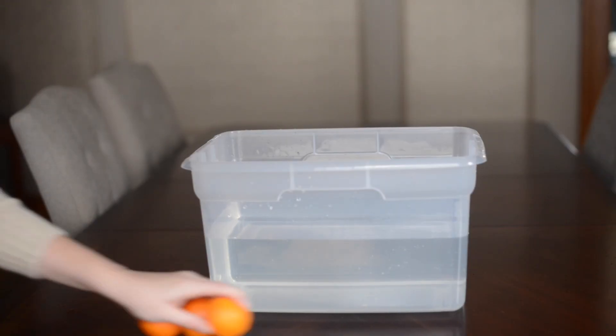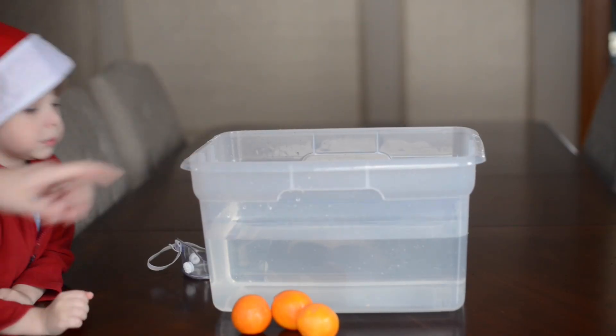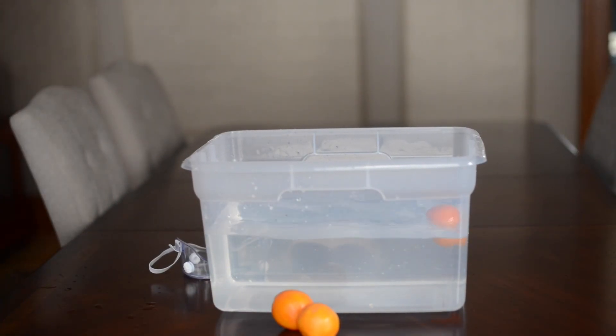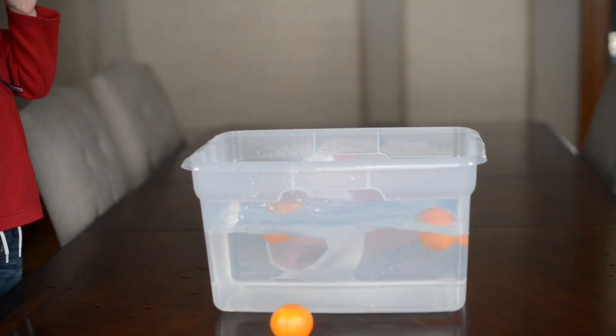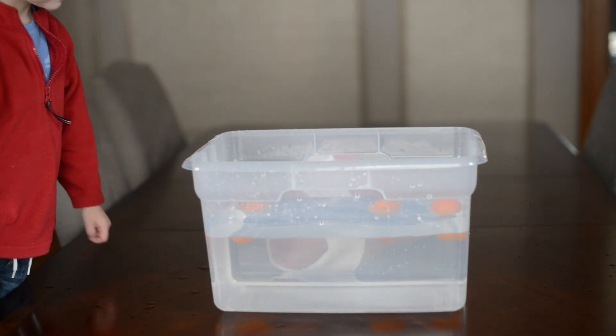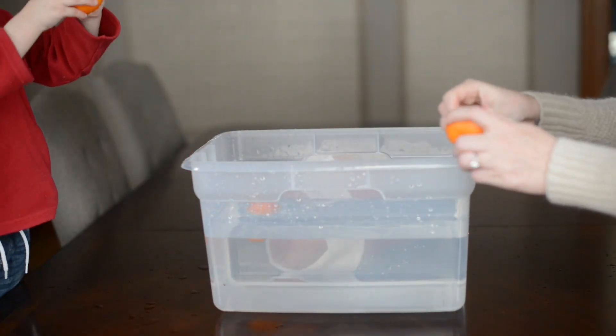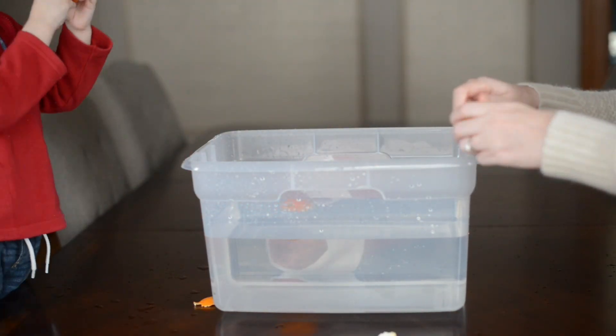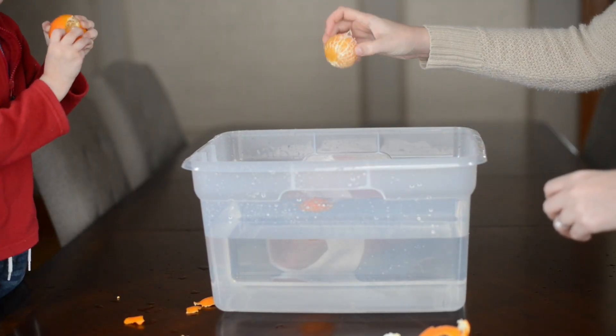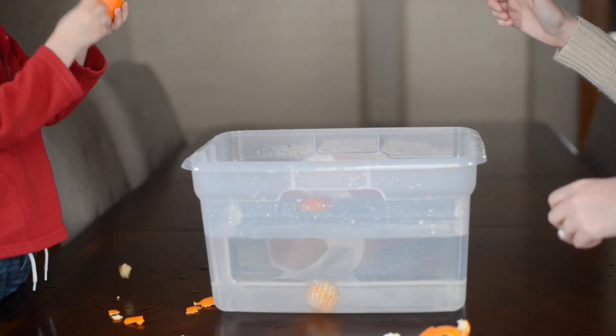What you need for this is some oranges and we're using a bucket of water, but you could also easily use a sink. You'll notice that the unpeeled orange floats. That's because the rind is very porous and filled with tiny pockets of air. Even though you're removing mass when you peel the orange, the peeled orange is more dense and sinks in the water.